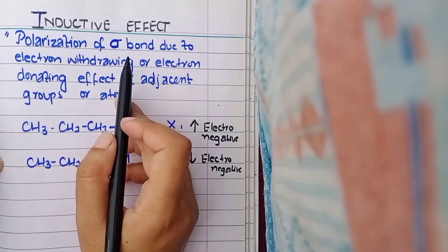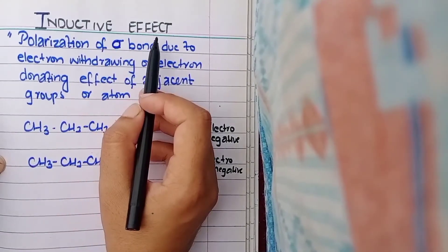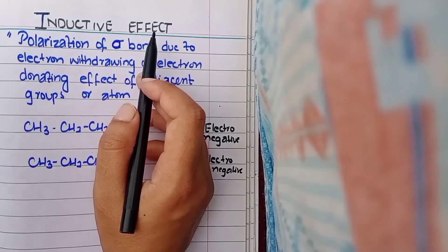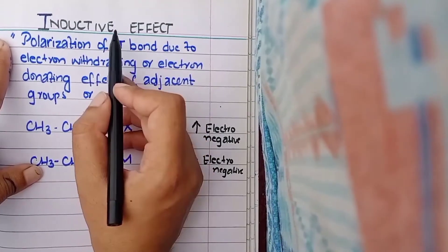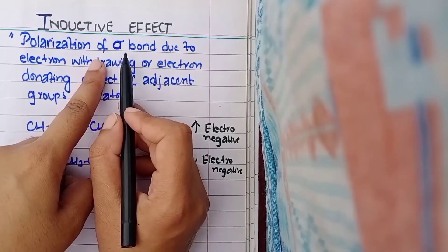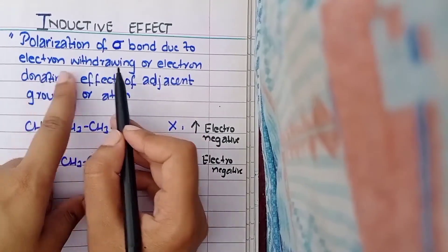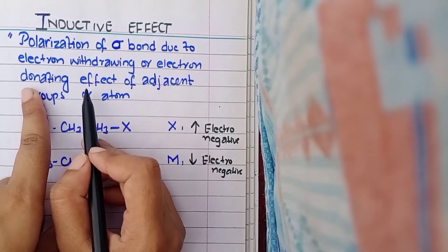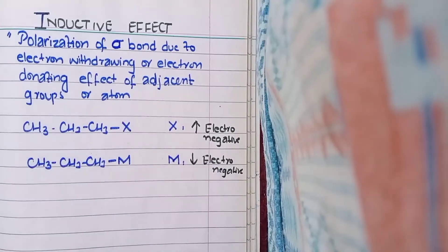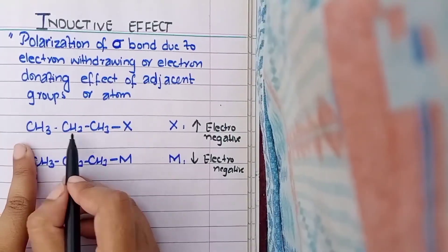In this video we are going to discuss the inductive effect. The inductive effect is one of the four electronic effects. Basically, what happens is polarization of a sigma bond due to the electron withdrawing or electron donating effect of an adjacent group of atoms. Let's go into an example so we can have a better understanding.